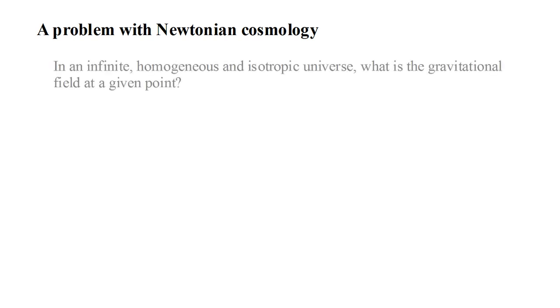Before the 20th century, there wasn't enough observational data to support a rigorous theory, and cosmology was little more than conjecture. However, it was known that a rigorous theory of an infinite universe based on Newtonian physics would confront a serious problem. We can see this by asking the question, in an infinite homogeneous and isotropic universe, what is the gravitational field at a given point?